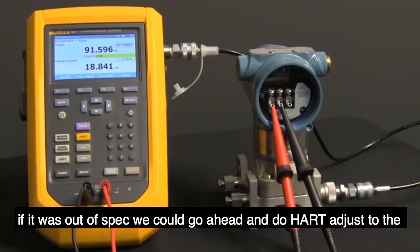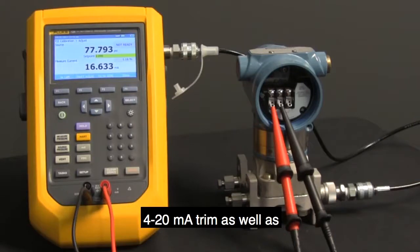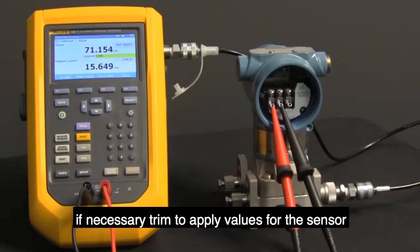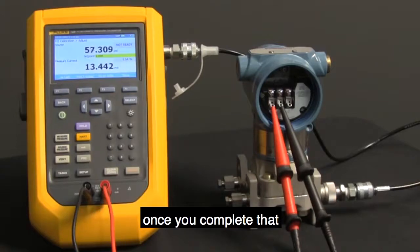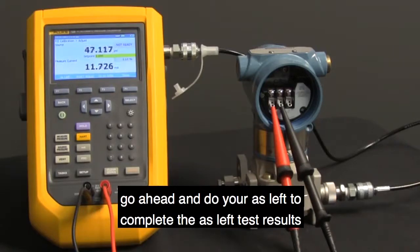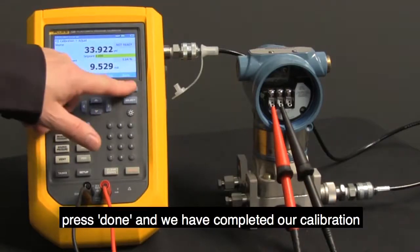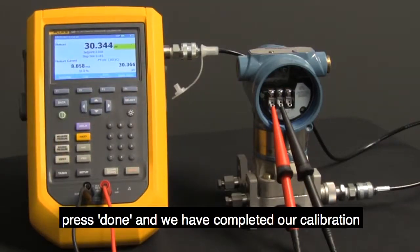If it was out of spec, we could go ahead and do HART adjust to the 4-20 milliamp trim as well as, if necessary, trim to applied values for the sensor. Once you complete that, go ahead and do your as-left to complete the as-found and as-left test results. Press done and we have completed our calibration.